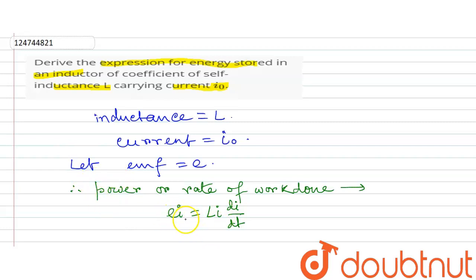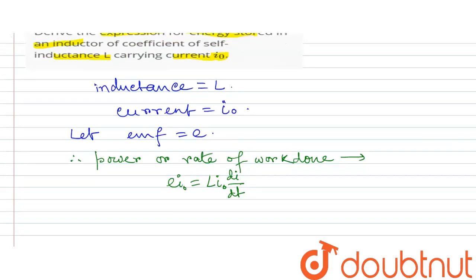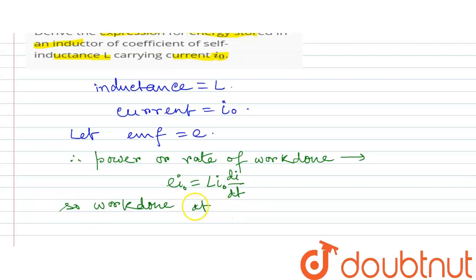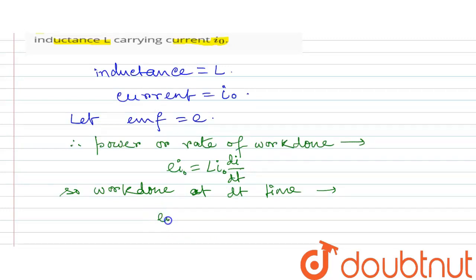Because the power is equal to voltage into current, voltage means EMF into current I, that is I0. So what is L·I·dI/dt? Because E is equal to L·dI/dt, already we know. So the power is equal to L·I·dI/dt. If work done at time dT, we multiply by dT: E·I·dI·dt is equal to work done at time dT.